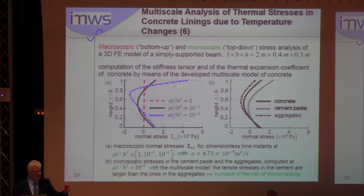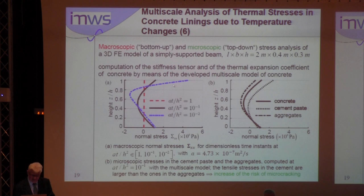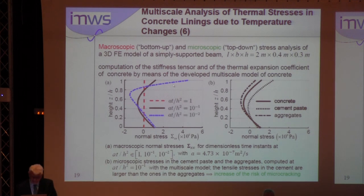The right figure shows the microscopic stresses in the cement phase and in the aggregates, computed at t·A/a-squared = 10 to the minus 1 with the multiscale model. The tensile stresses in the cement are significantly larger than the ones in the aggregates, and this results in an increase of the risk of microcracking.